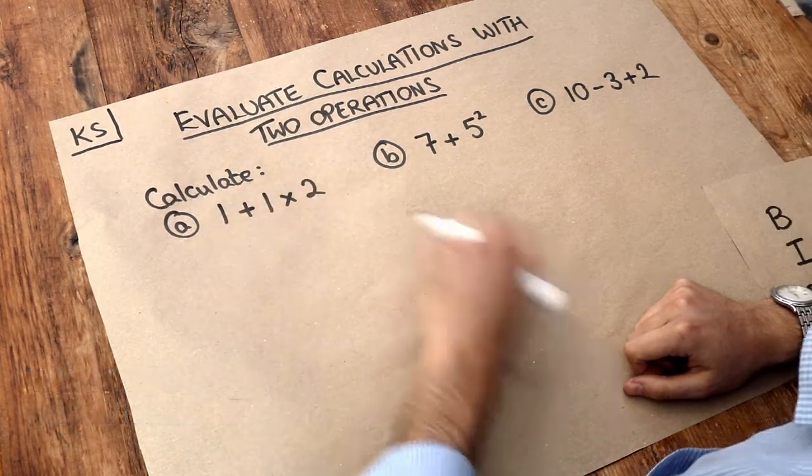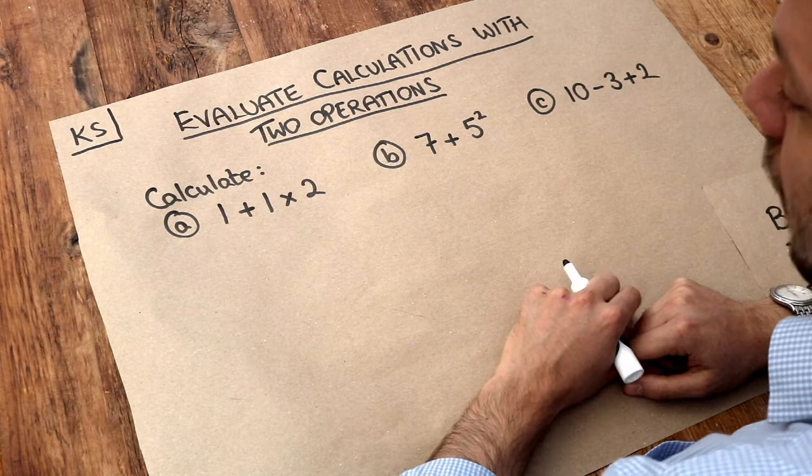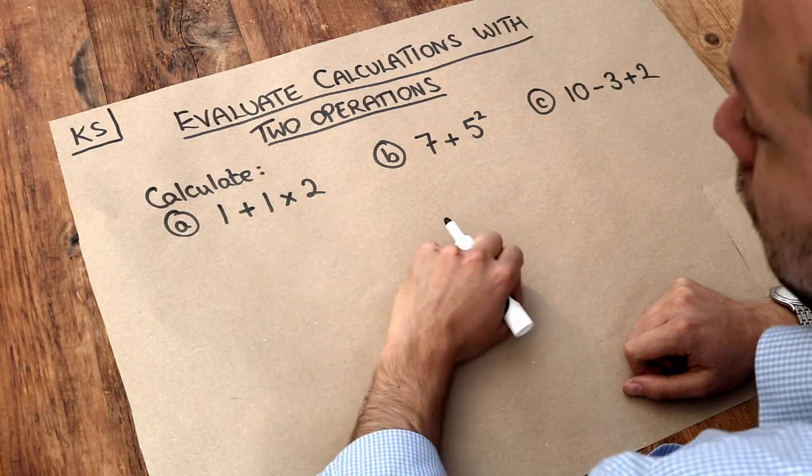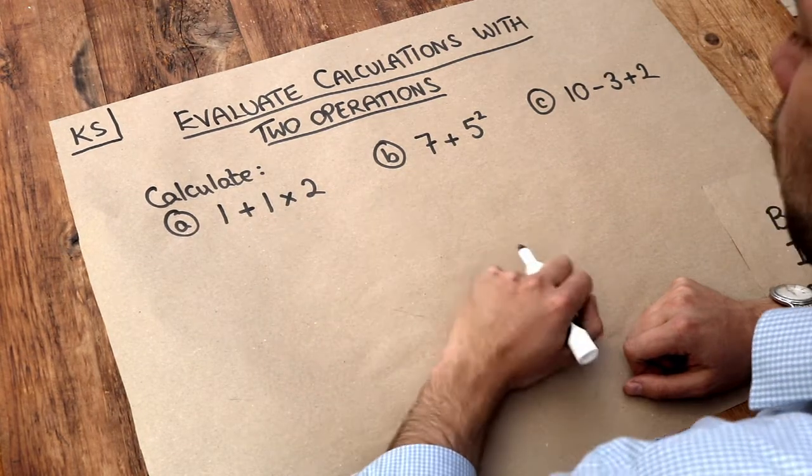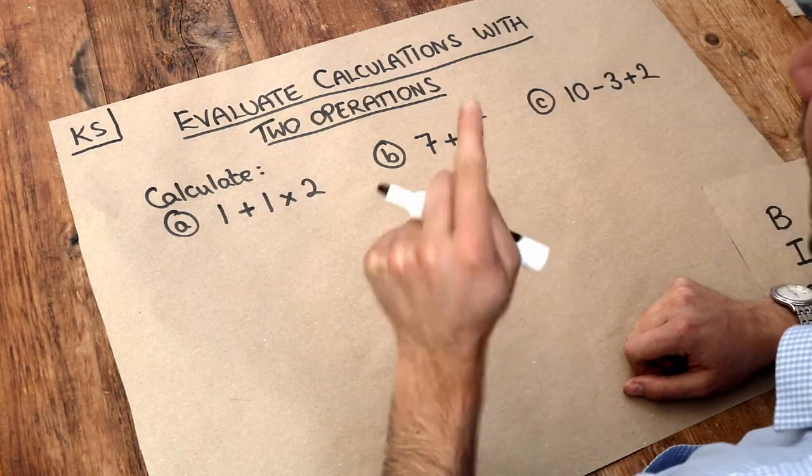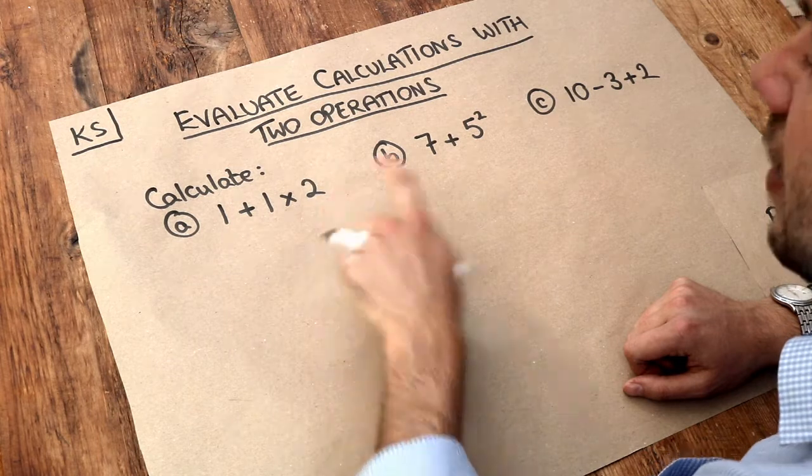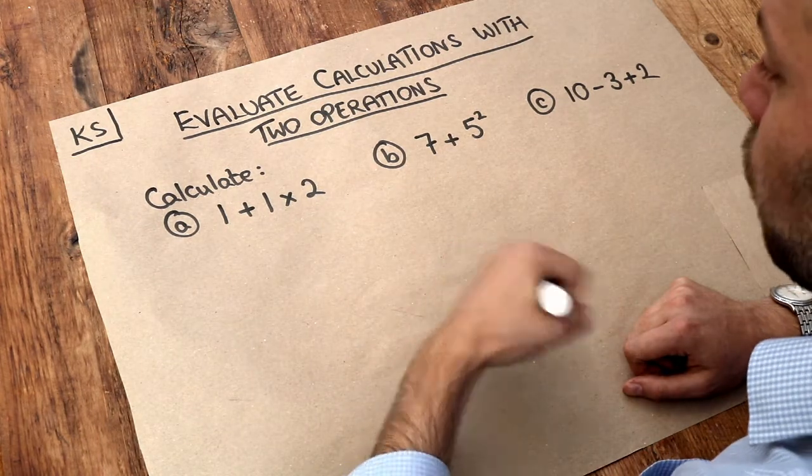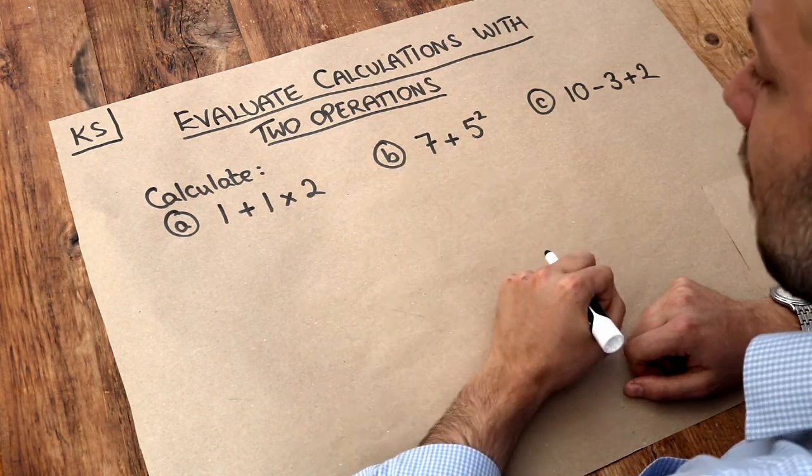Now let's look at a simple calculation like this. You might think, well, you do 1 plus 1 is 2, times that by 2, you get 4, surely. But it's not as simple as that. We don't just calculate things from left to right. There's actually an order in which we have to work out things within a mathematical expression.